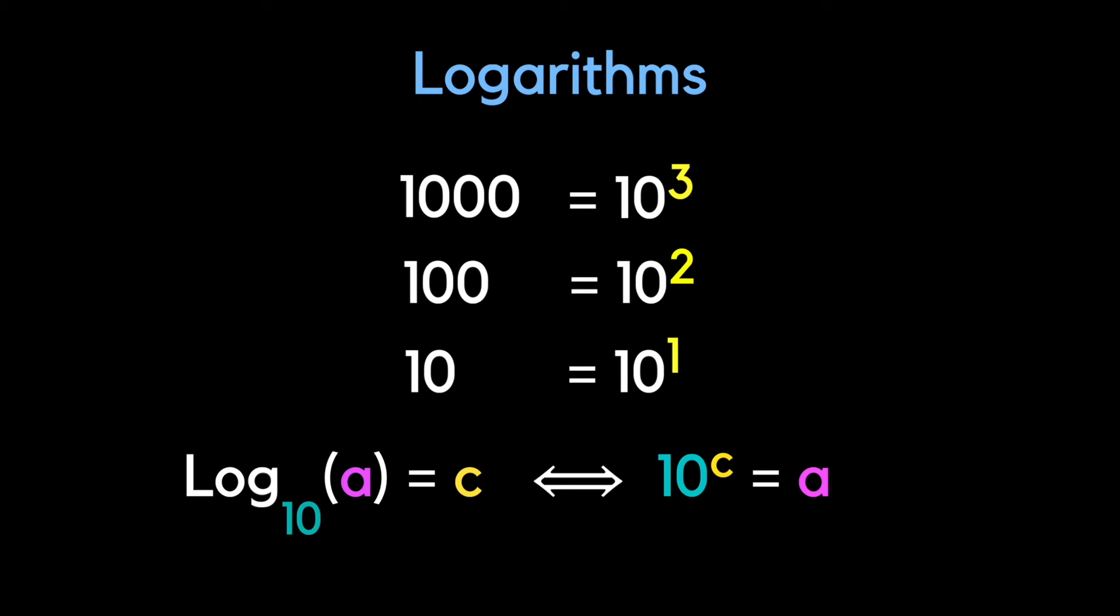A quick reminder about logarithms. If you have a thousand, that could be rewritten as 10 to the power of three. So the log in base 10 of a thousand is three. The log of a hundred is two, and the log of 10 is one. For a log of base 10, it is rewriting your number as 10 to the power of something, and that something in the power is your logarithm.